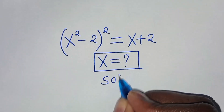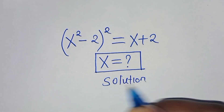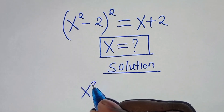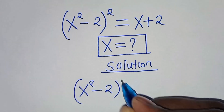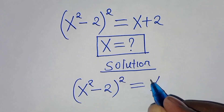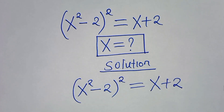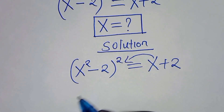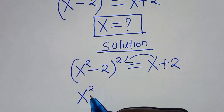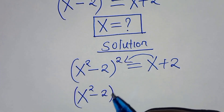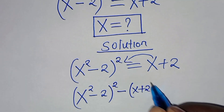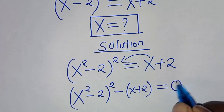Now let's present a solution from here. So we have x squared minus 2, raised to power 2, this is equal to x plus 2. The first step here is to take x plus 2 on the left-hand side, so that we have x squared minus 2, raised to power 2, then subtract x plus 2, this is equal to 0.